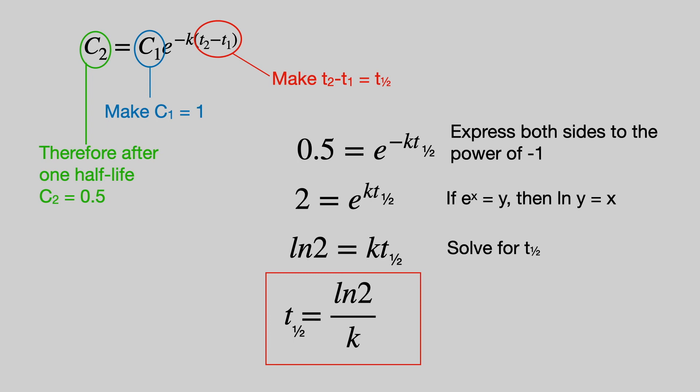And we get this equation: half-life equals the natural log of 2 divided by the elimination rate constant. That is the standard equation for calculating half-life from the elimination rate constant.